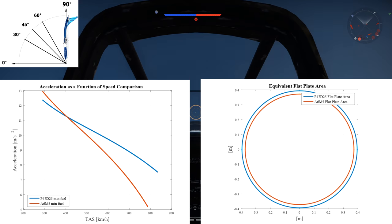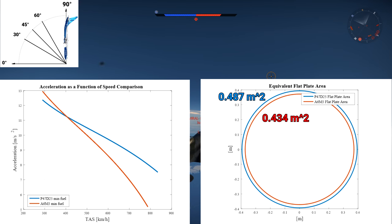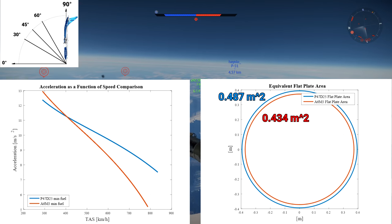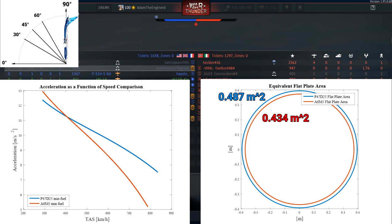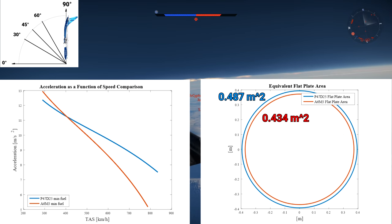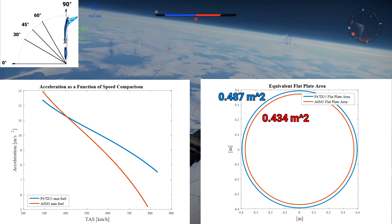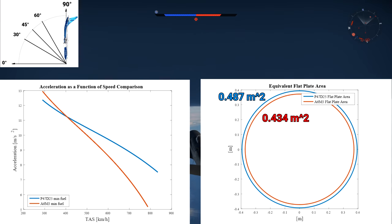As you can see on this graph, the P-47 and the Zero have similar equivalent flat-plate drag area, but the P-47 has over twice the Zero's mass, so it has a lower drag-to-mass ratio than the Zero. The equivalent flat-plate drag area of an aircraft is just how big of a surface is needed to produce as much drag as the aircraft itself when at the same speed.